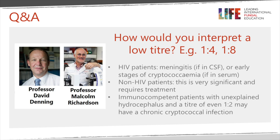The question about interpretation of a low titer — for example 1 in 4 or 1 in 8: in spinal fluid that means you have meningitis; in serum it likely represents an early phase of cryptococcemia and the patient is much less likely to have meningitis unless they have symptoms. In non-HIV patients even low titers are very significant and need to be addressed as if the patient has a life-threatening cryptococcal infection. There is a very small group of apparently immunologically normal patients who present with hydrocephalus and chronic cryptococcal meningoencephalitis who often have very low antigen titers — just undiluted positive or one to two — and it's important to take those patients seriously.